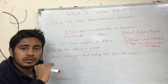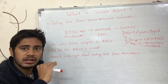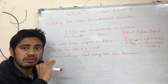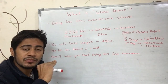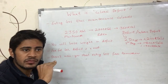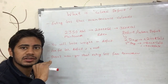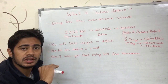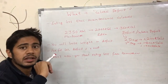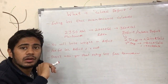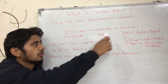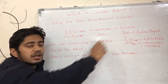If we eat more calories every day than our maintenance, our weight will increase. Caloric Deficit means eating less than that maintenance number. For example, if my maintenance calories are 2350 and I ate 2000 calories, then I have created a 350 calorie deficit.